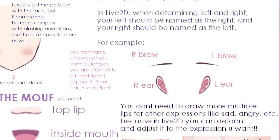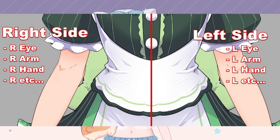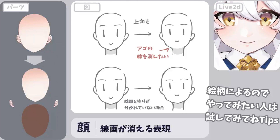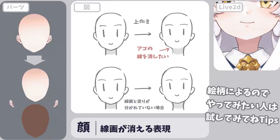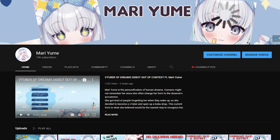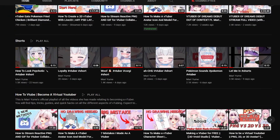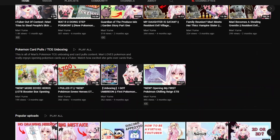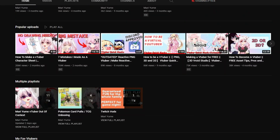The ears and the eyebrows folder are pretty self-explanatory — you just need to separate them into left and right, each drawn on its own layer. If you're finding this helpful, give this video a like and subscribe to my channel — I do a lot of tutorials like this, as well as other VTuber content.